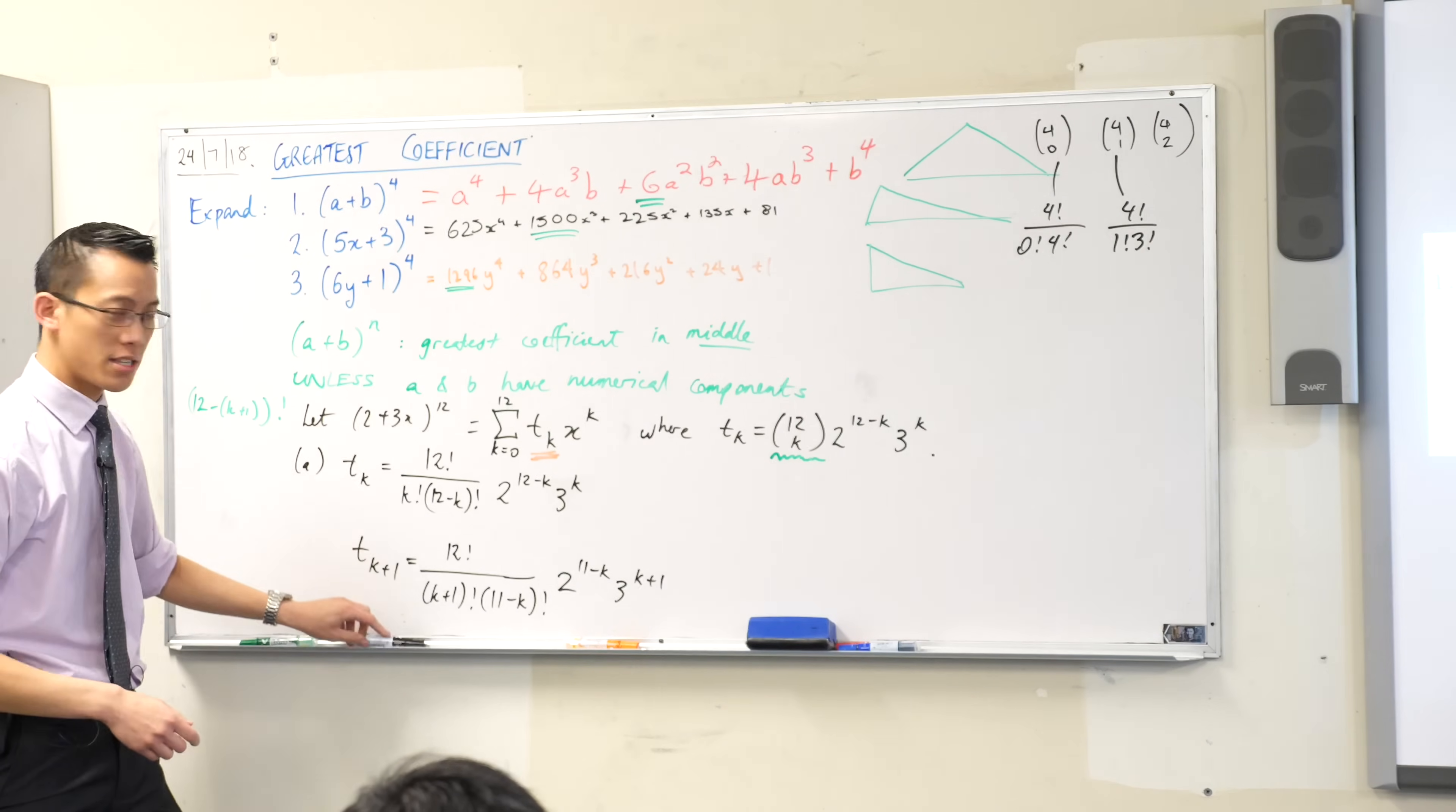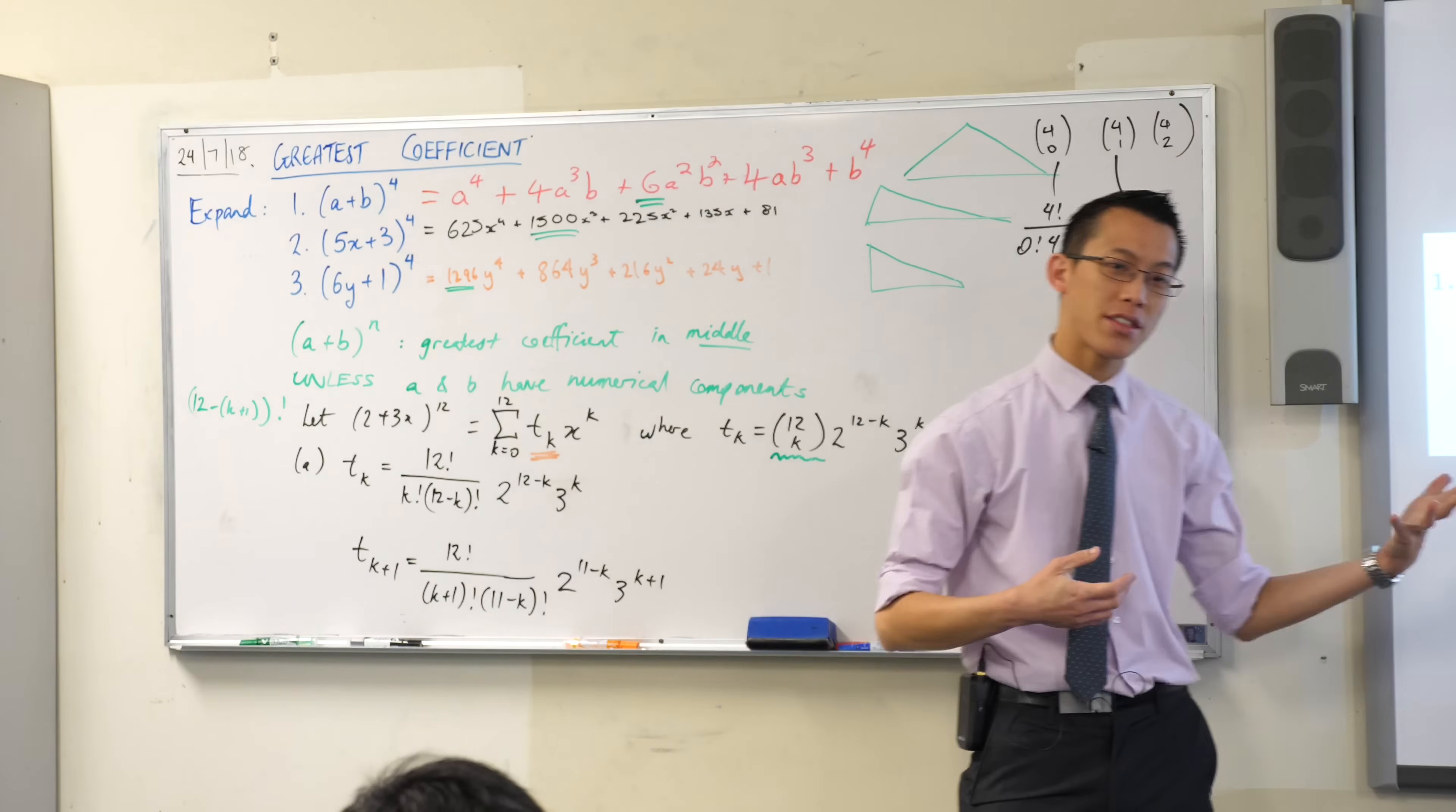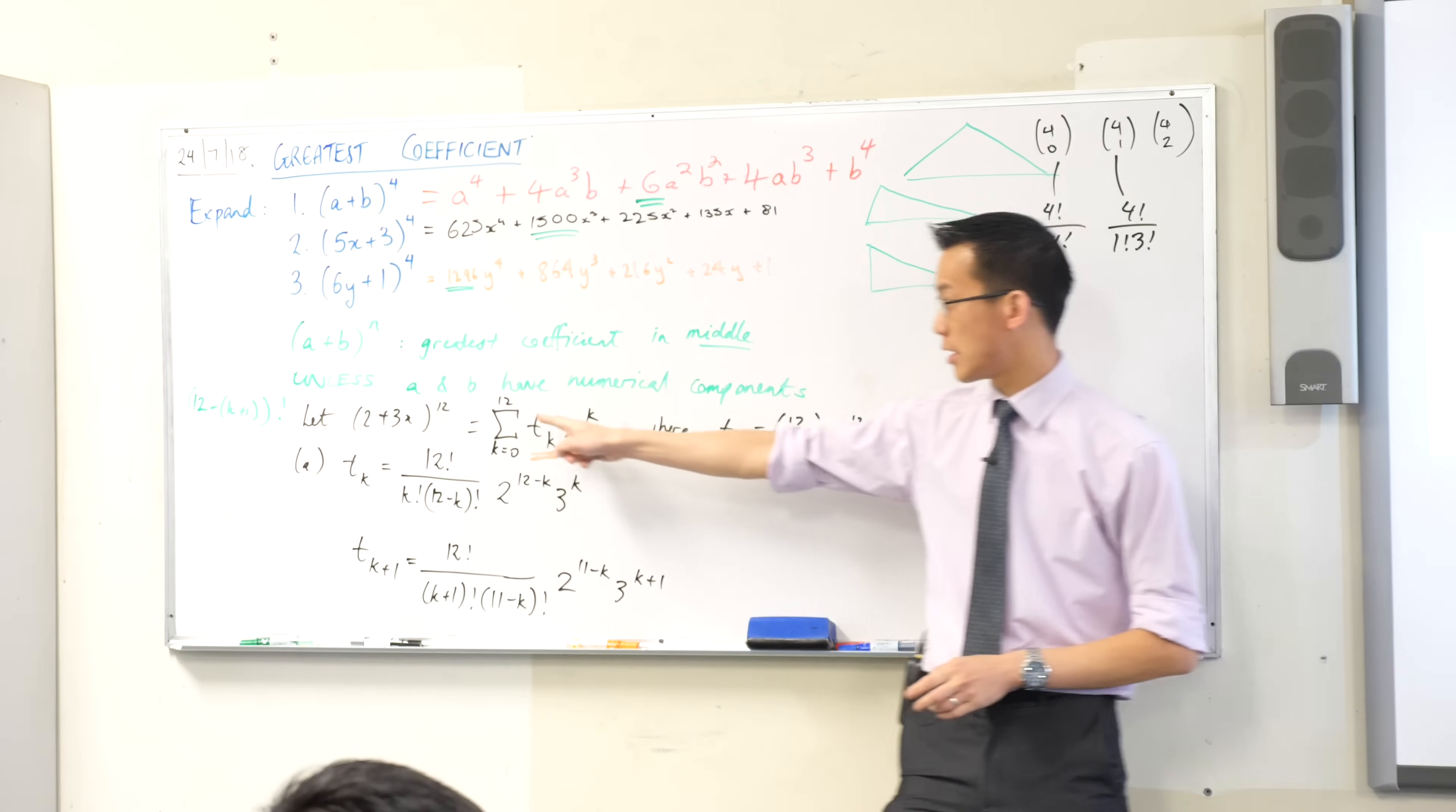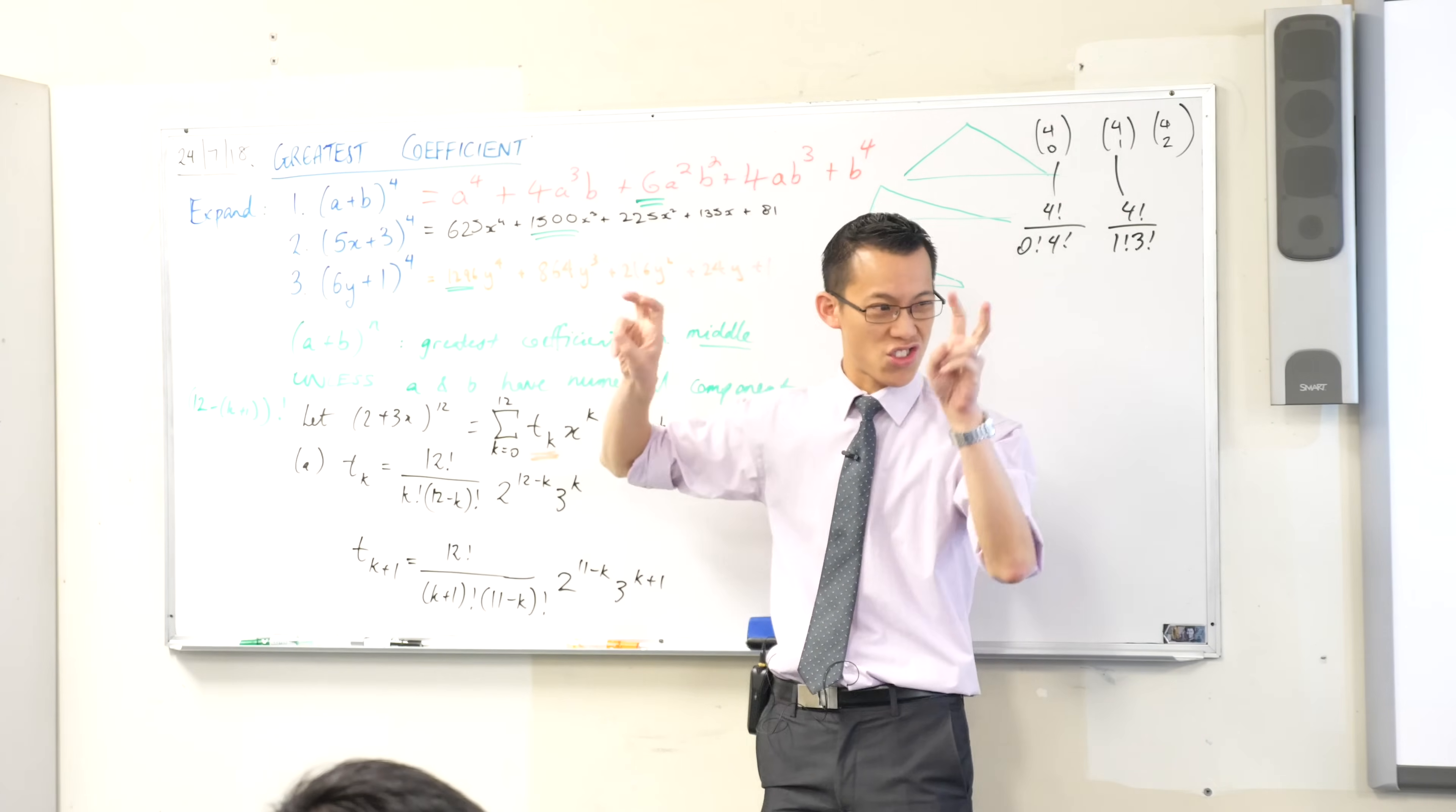Now, they then say, and this requires a bit of thought, hence show that the seventh coefficient is the greatest one. How many coefficients are there going to be in this expansion? There will be 13. There will be the 12 and then the zeroth one, which is 13 of them.